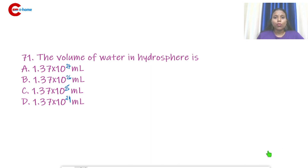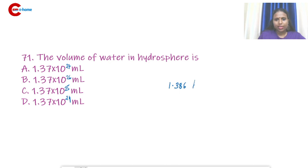Question number 71: The volume of water in the hydrosphere. The answer is 1.386 billion kilometers cubed.